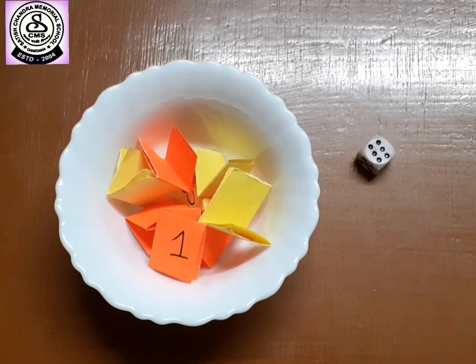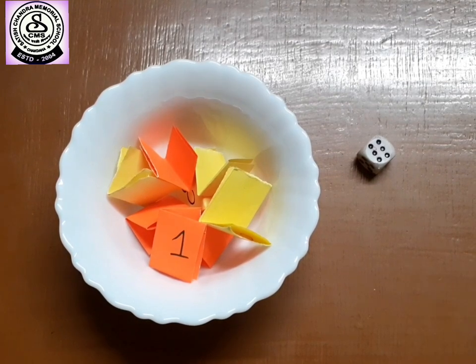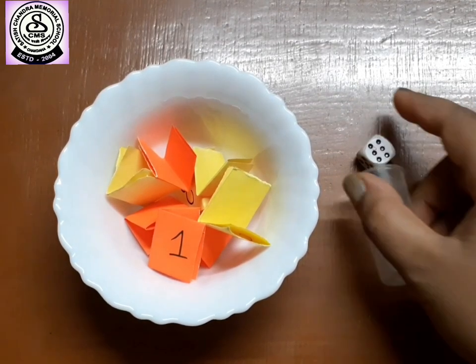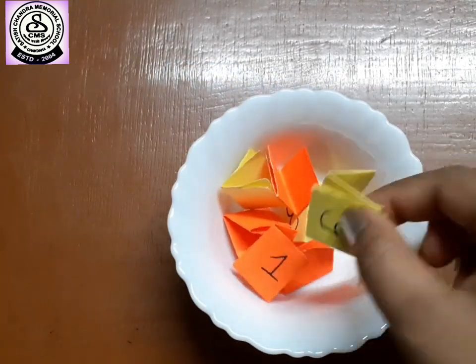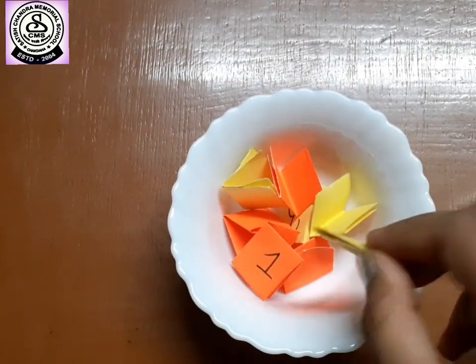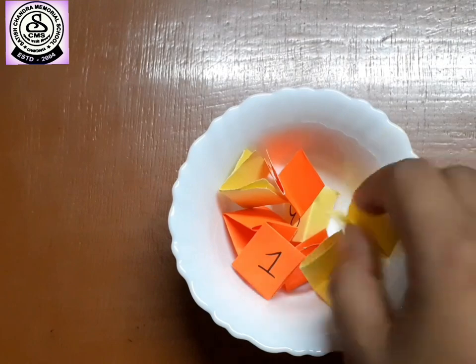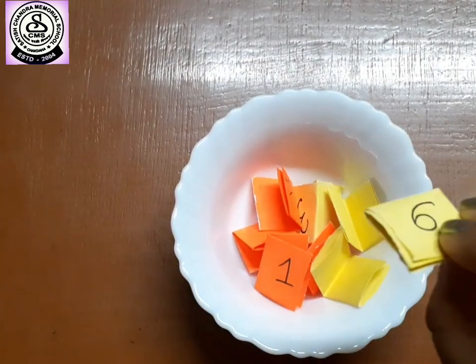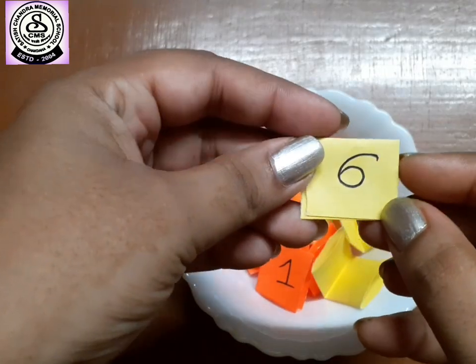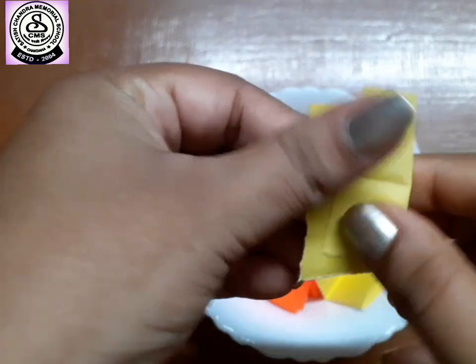Let's roll the dice. Wow! Number six! Right! So, let's pick number six from here. Where is number six? Five. Eight. Not six. We have got six. Let's open and see what is there inside.